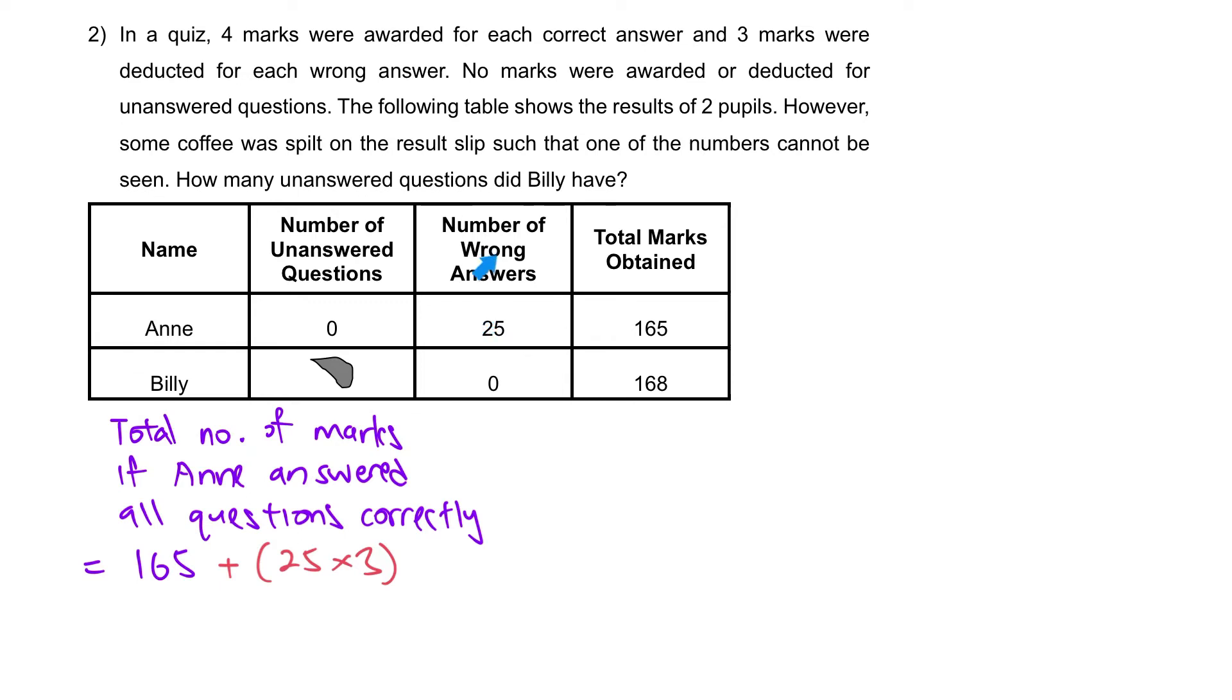Instead of getting them wrong, you get it correct. So we need to add another 4 marks per question and that will give us a total of 340 marks. Again, 340 marks will be the total marks if Anne answered all questions correctly.